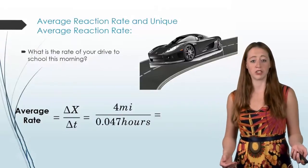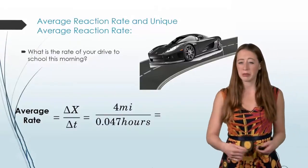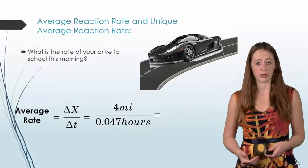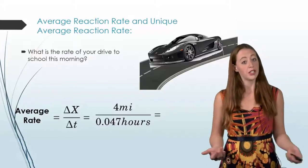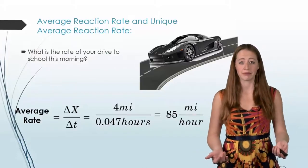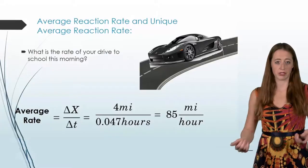So let's say you have a 4 mile drive to school. And I'm going to put it in terms of hours, just because that's what we're used to looking at for speed of a car. So 0.047 hours. You would have driven 85 miles an hour. And that is your average rate to school.